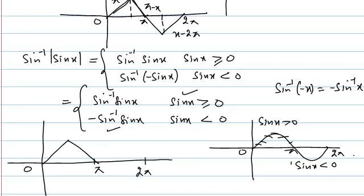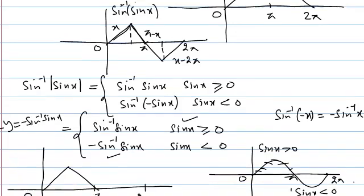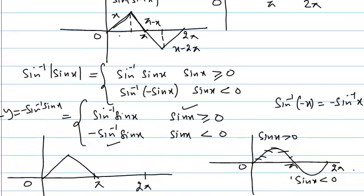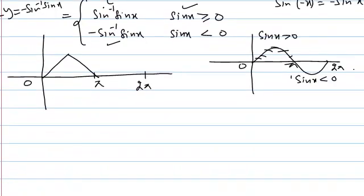Between π and 2π, sin x is negative, so we use −sin⁻¹(sin x). To draw this, we take the image of the sin⁻¹(sin x) graph in the x-axis (replacing y by −y). Taking that image gives us the graph between π and 2π. This completes the graph of sin⁻¹|sin x|.